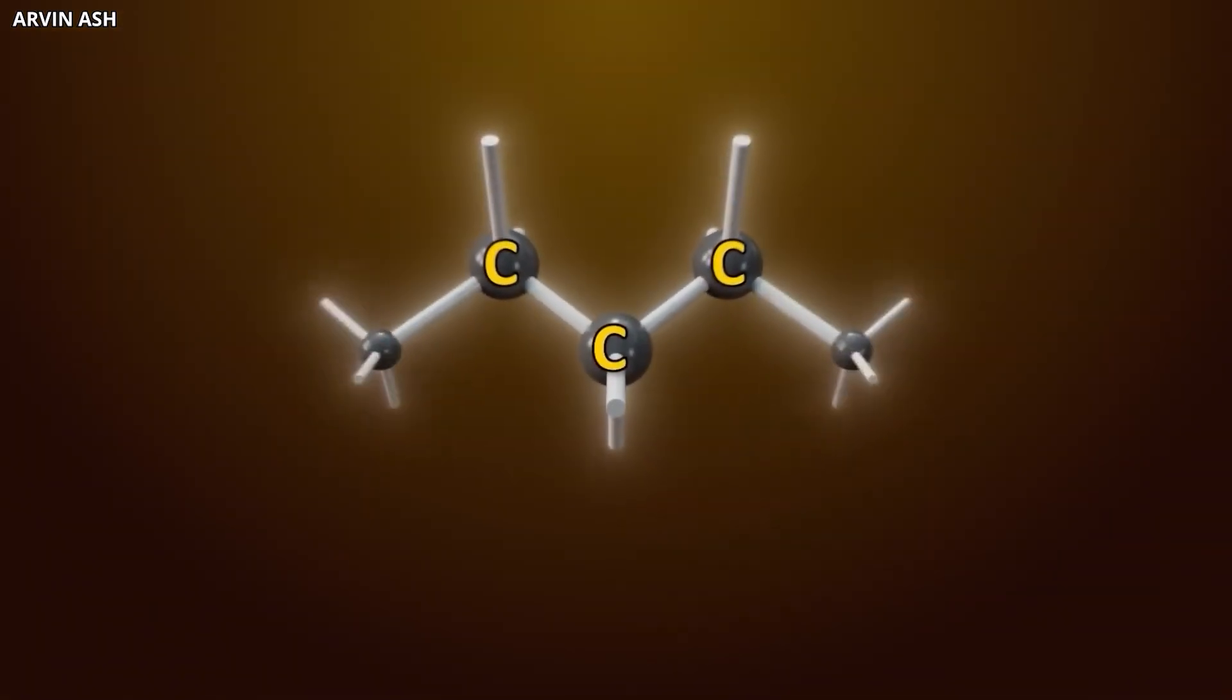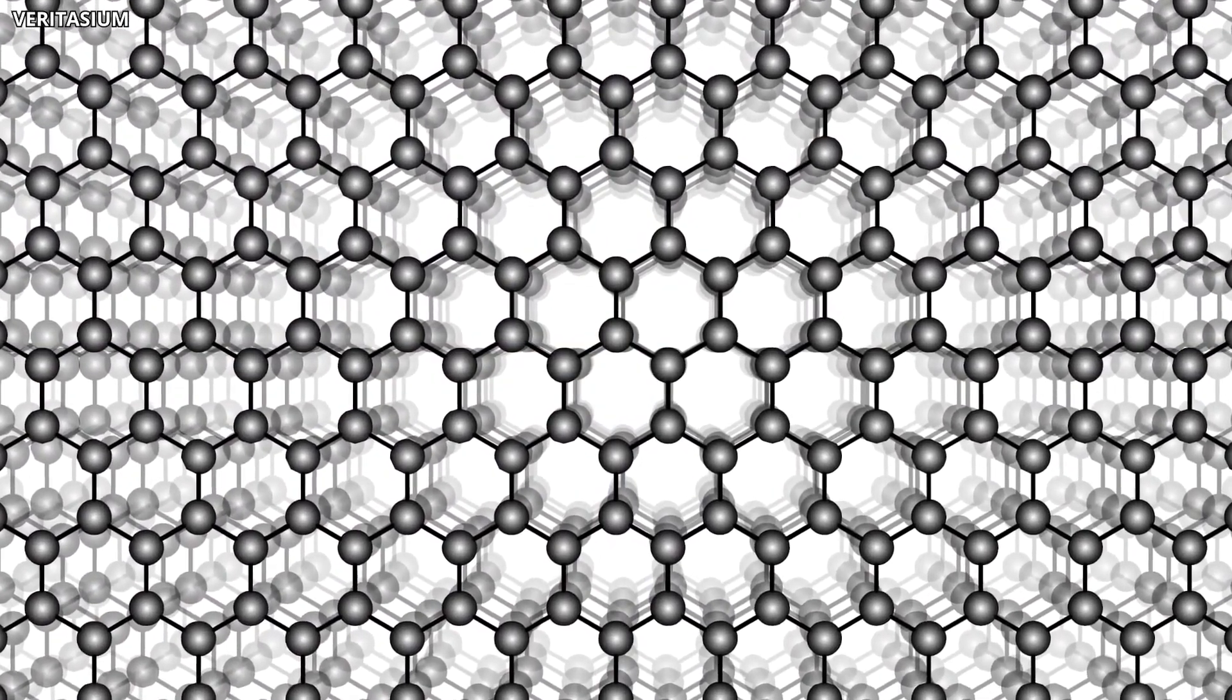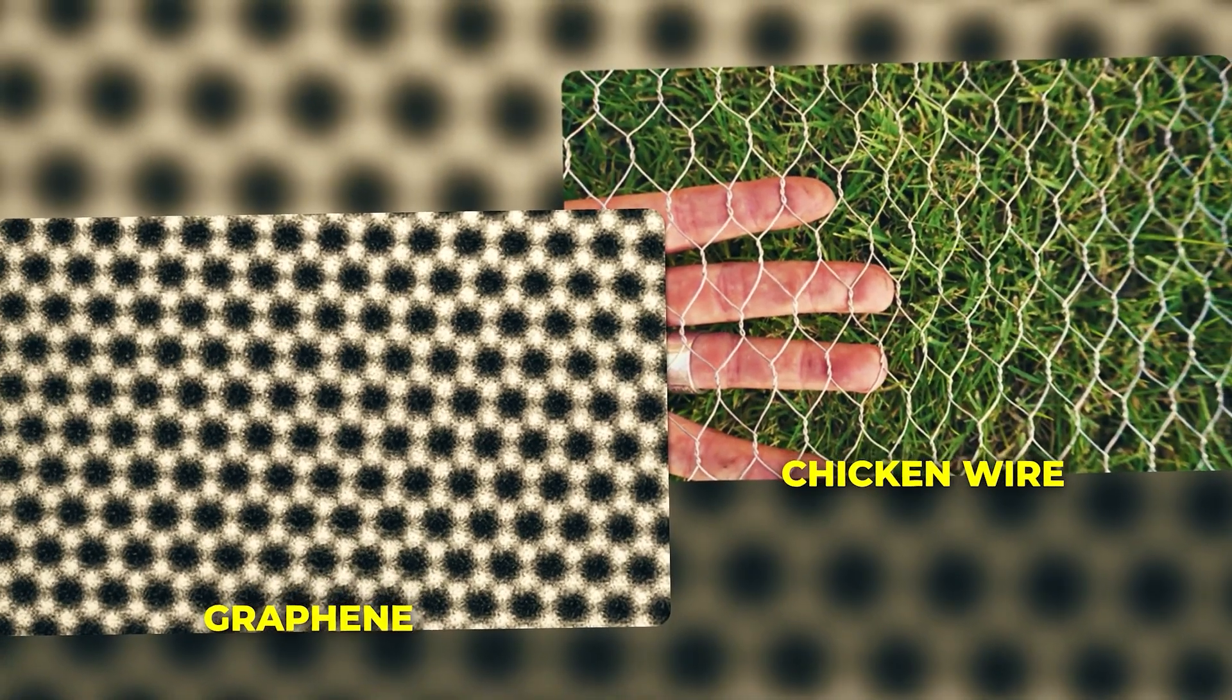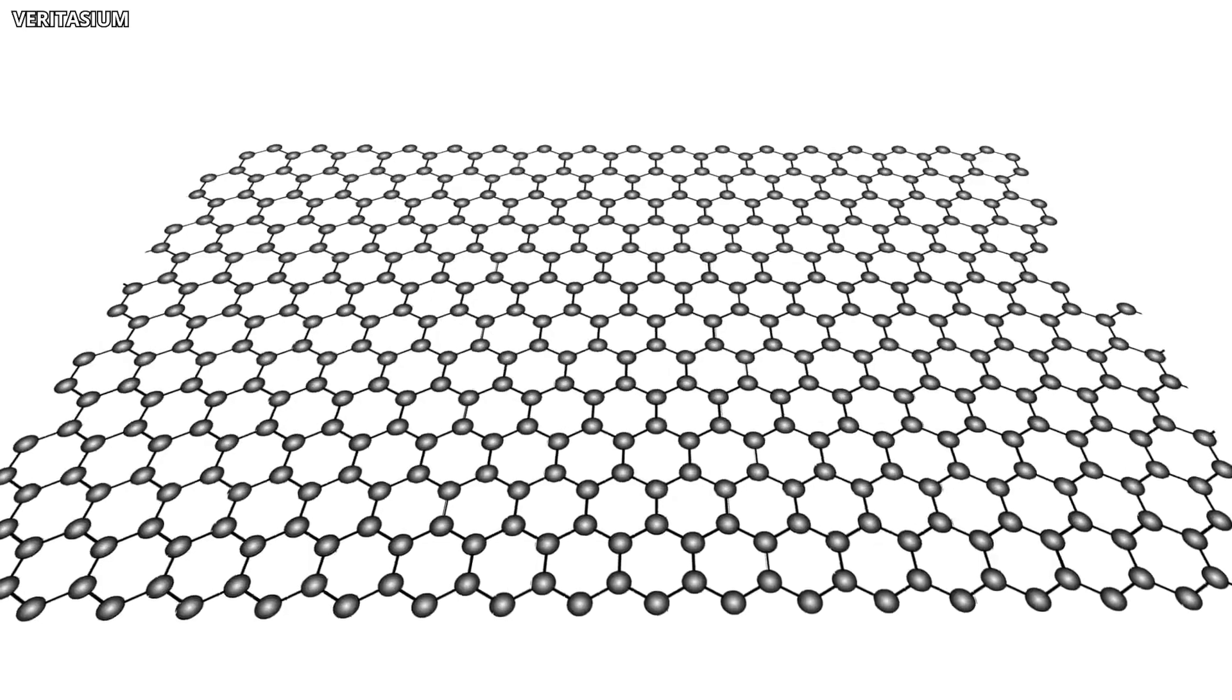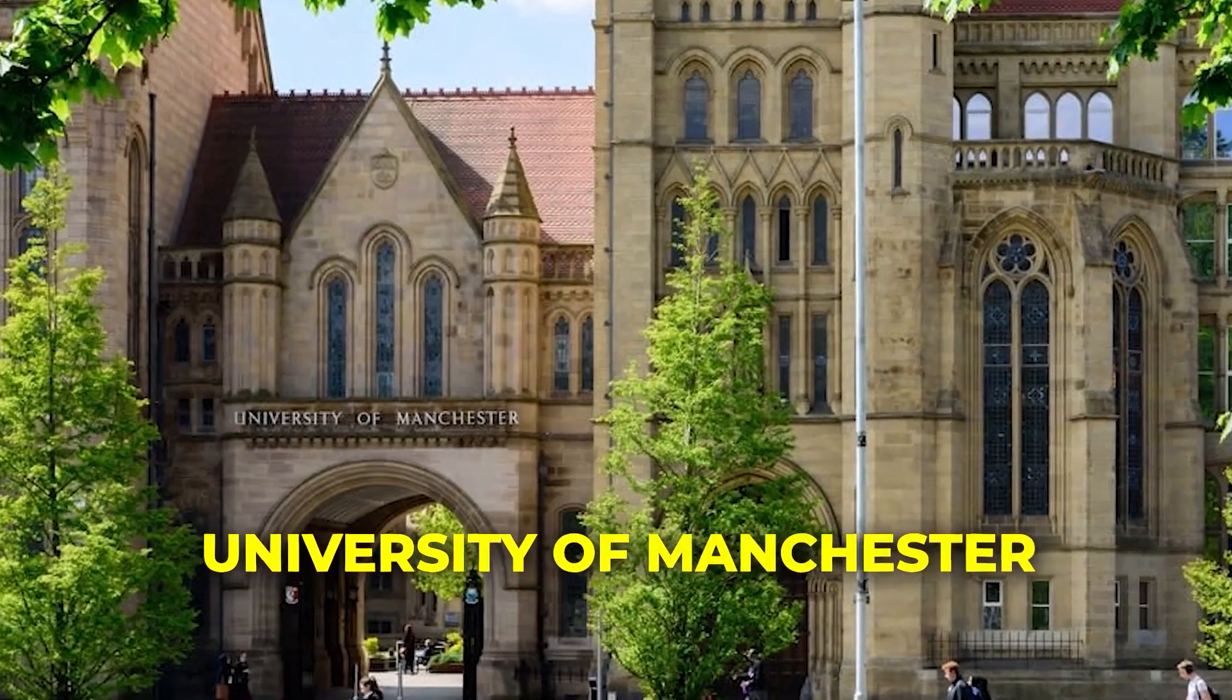So what's actually arriving and why should you care this time? What graphene actually is and why it matters. Graphene is just carbon, but it's carbon arranged in a single layer of atoms, forming a hexagonal lattice that looks almost like chicken wire under a microscope.